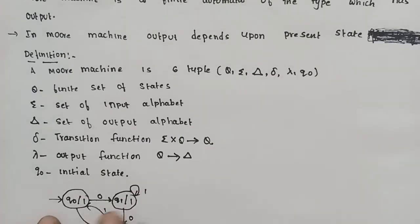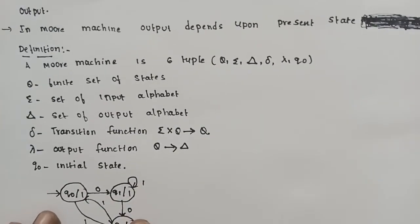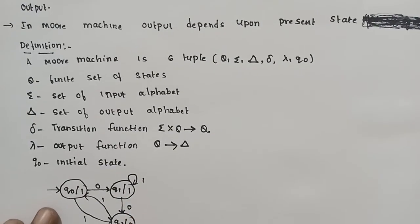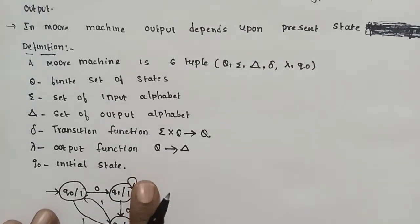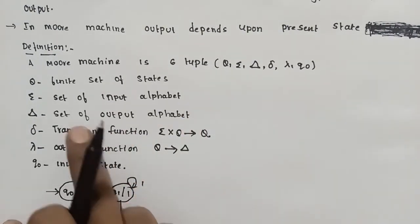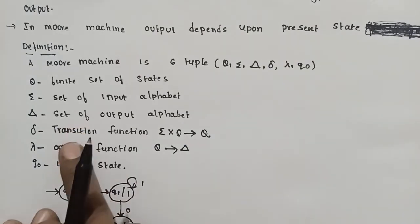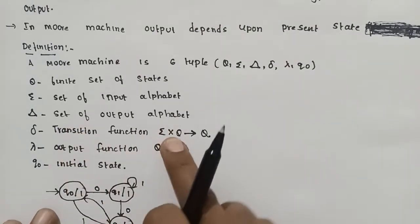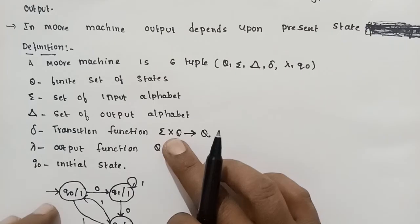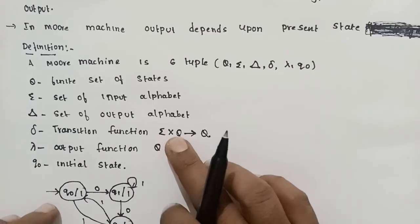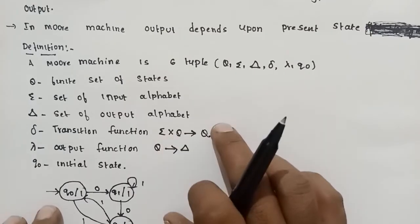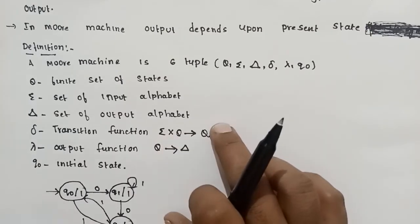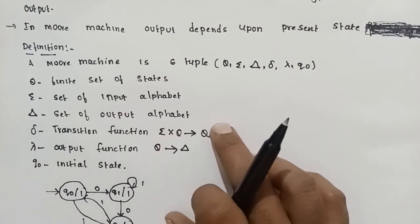Q then q1, Q. This set of output alphabet is delta. Delta is the transition function, so the transition function maps a particular state and the input applied to the next state and the transition function.